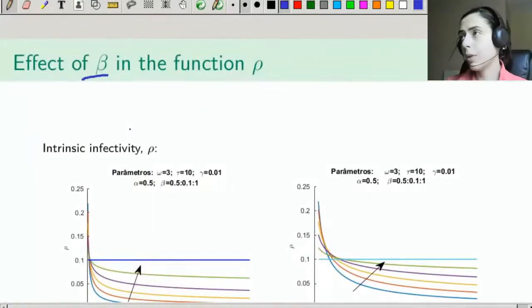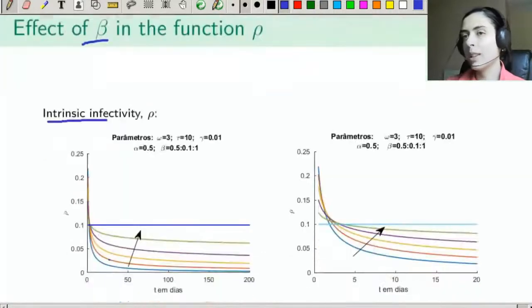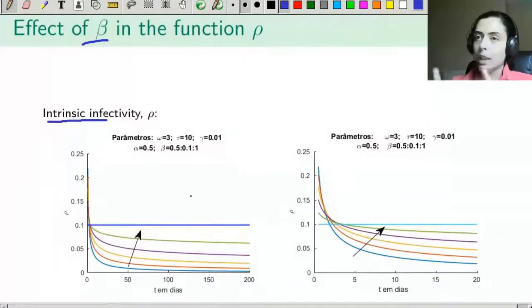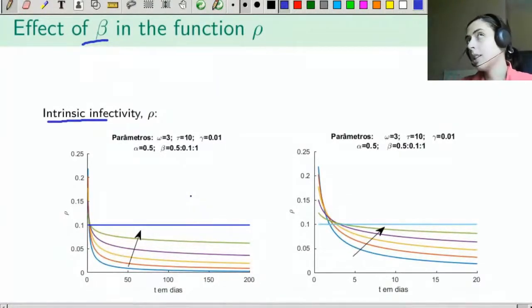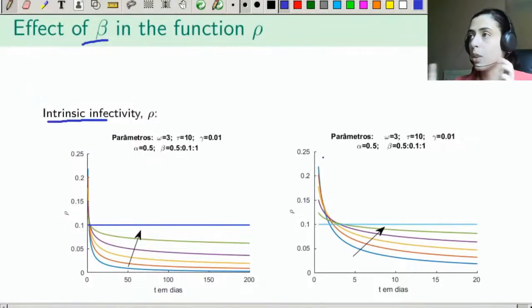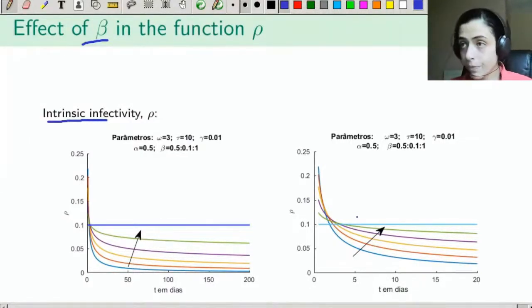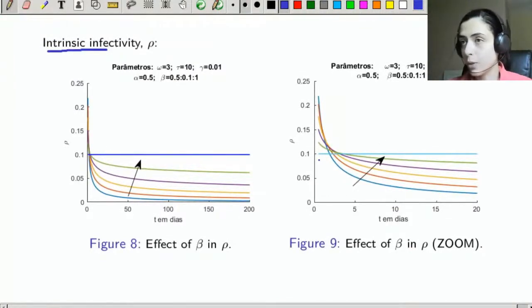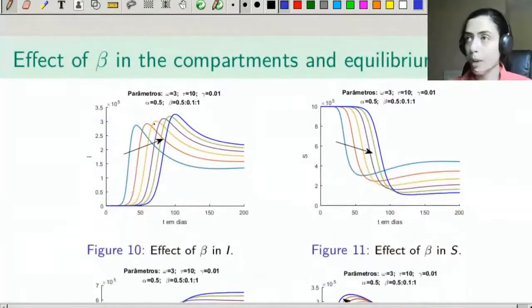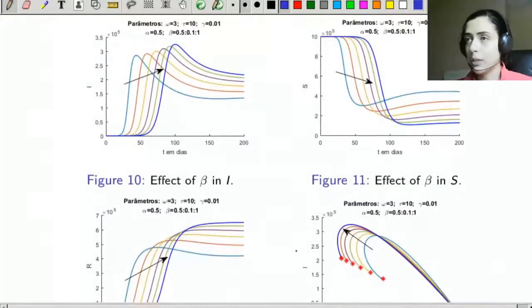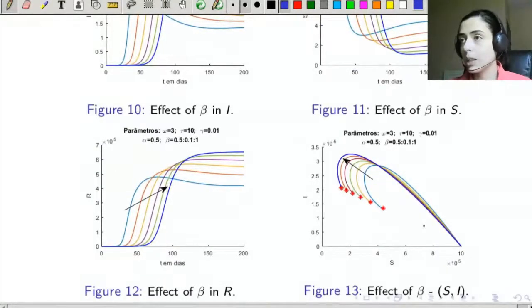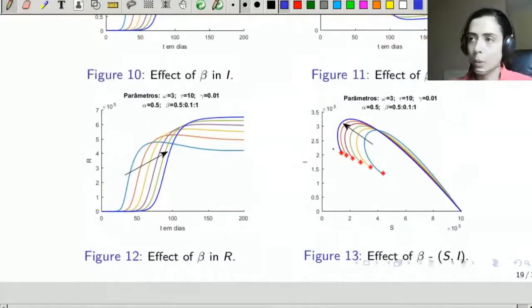Order β has no influence on φ, but its influence on intrinsic infectivity is very interesting. If we consider the integer case β equal to 1, infectivity will be constant — any infection age of the individual will have the same intrinsic infectivity. We know that is not true. So a good approximation for most diseases is to consider β less than 1, which gives maximum infectivity at the beginning, decreasing over time. As β increases, we have lower infectivity at the start and higher infectivity over time — resulting in a later but also higher peak. The SI plane shows that the larger the β, the larger the I, though the trajectory profiles are quite similar, and the endemic equilibrium also varies with β.